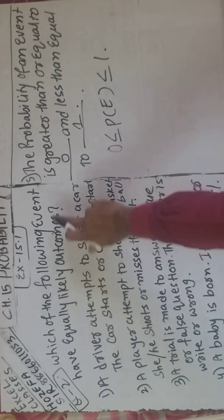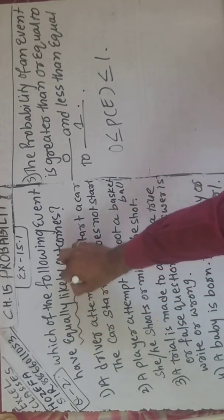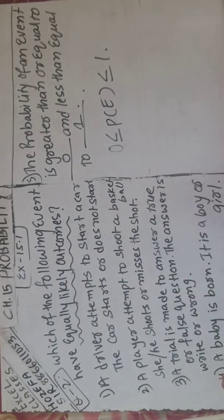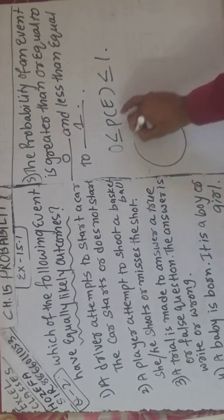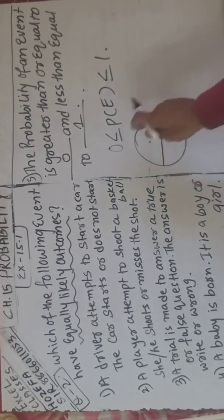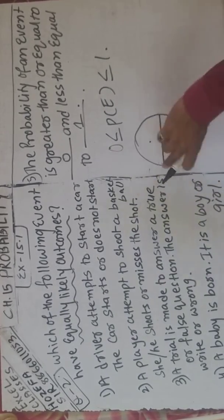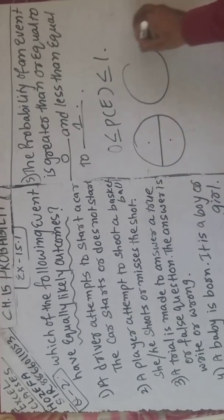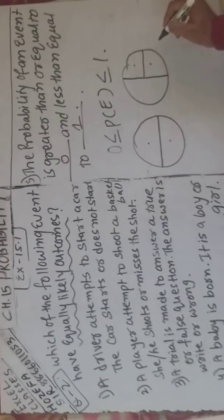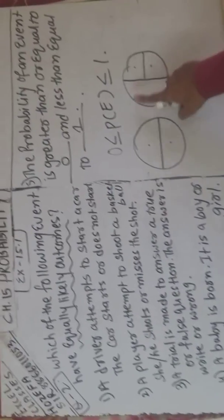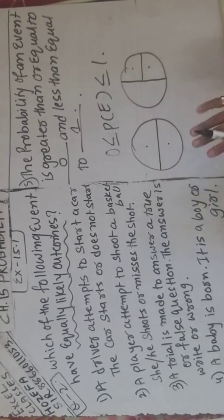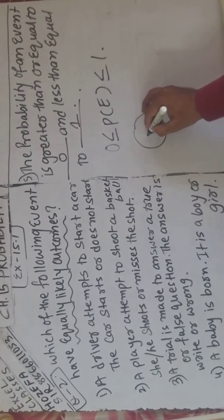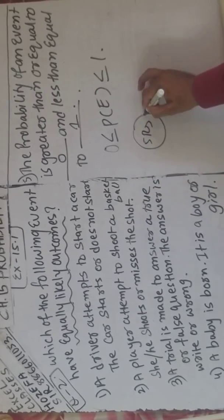Now second question: which of the following events has equally likely outcomes? 'Equally likely outcome' — that means equal chance of happening. For example, if a spinner is divided in half and spun in a circular way, both outcomes have equal chance. Similarly, a coin — head ya tail aane ke equal chance hain.